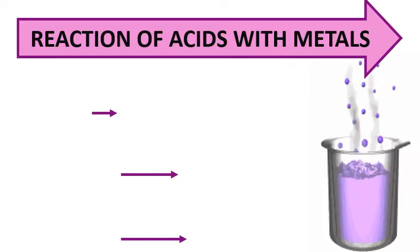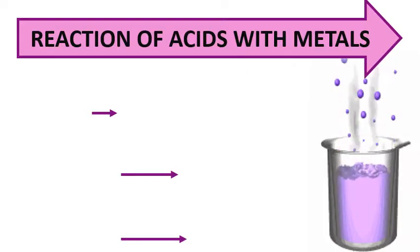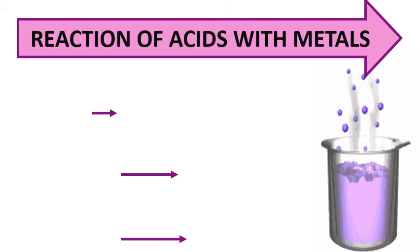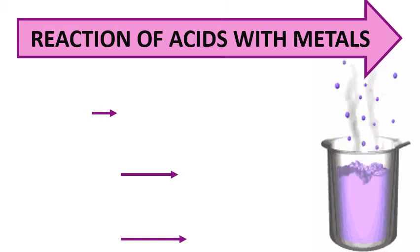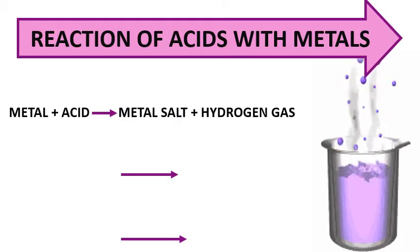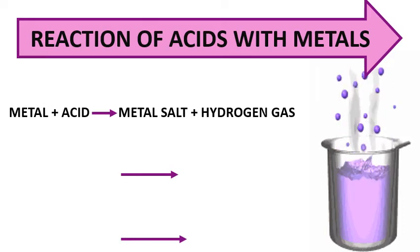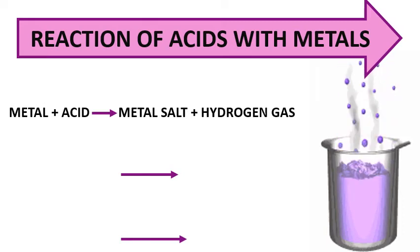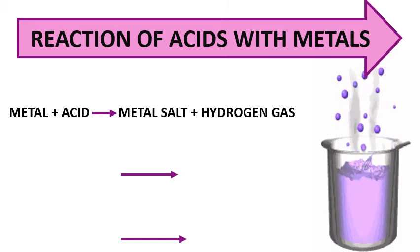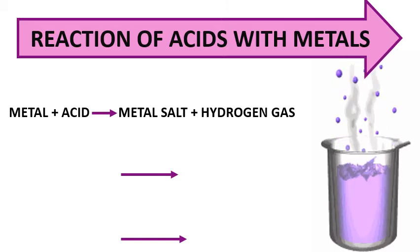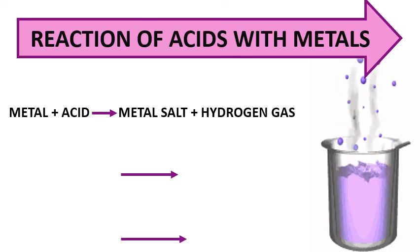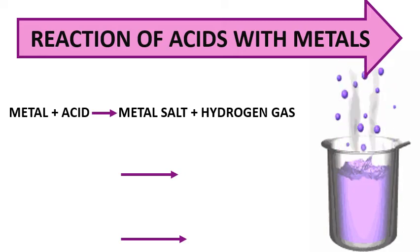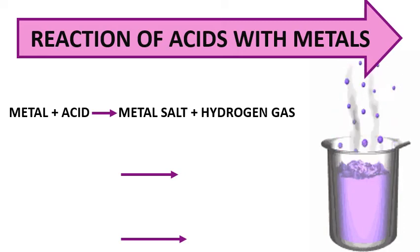In this series, the first chemical property of acids is the reaction of acids with metals. Acids react with metals to liberate hydrogen gas. Jab metal ko acid ke saath react kiya jata hai, toh metals hydrogen ions ko displace kar dete hai and it will form salt and hydrogen gas will be released.